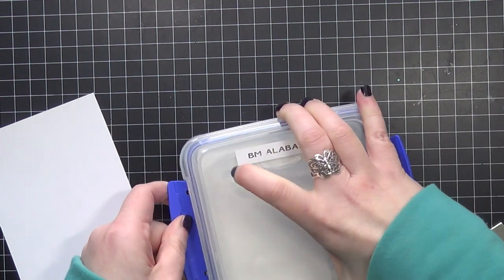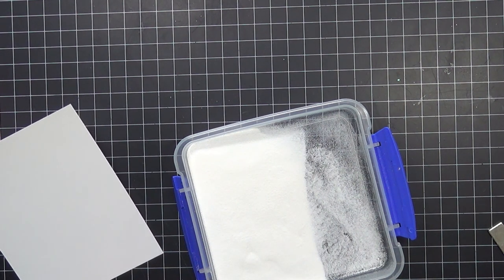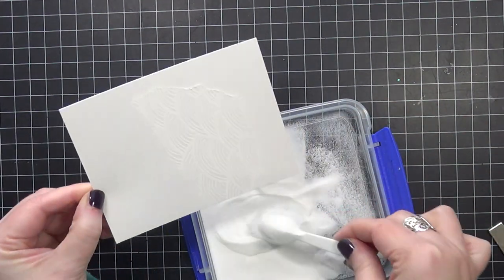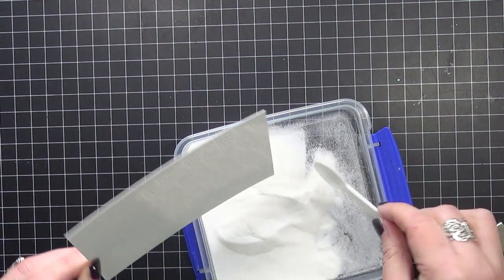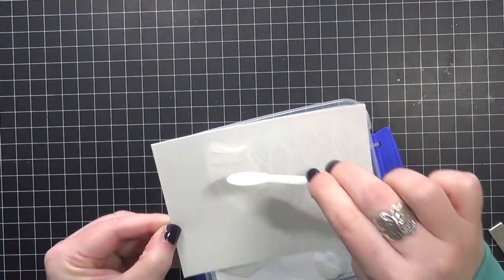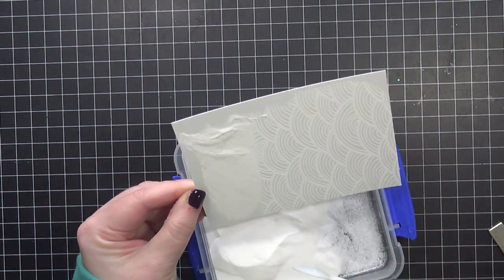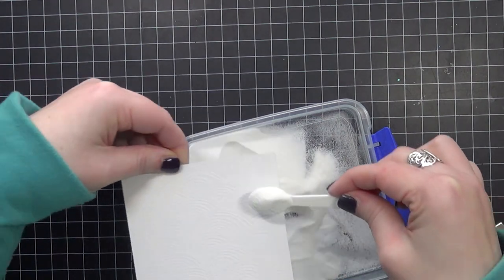For my embossing powder I'm using my favorite, which is the Brutus Monroe Alabaster. This is a great white embossing powder. I'm going to make sure that I get this really good and covered all over the background. Again I'm going to do this twice, and then once I get all that covered, I'm going to take my heat gun, heat it up and make sure it's really good and hot before I bring it to my cardstock so I can heat set both of these panels.